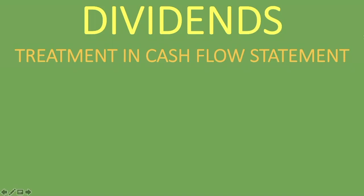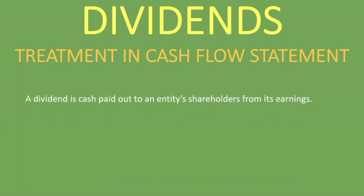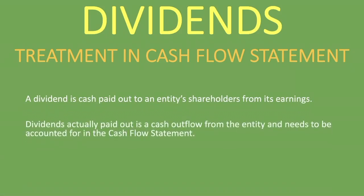What many have asked is why we treated dividends the way we did in the cash flow statement, and in this lesson we're going to clarify that. So what are dividends? Obviously we know that a dividend is cash paid out to an entity's shareholders from its earnings. Dividends actually paid out is a cash outflow from the entity and needs to be accounted for in the cash flow statement.